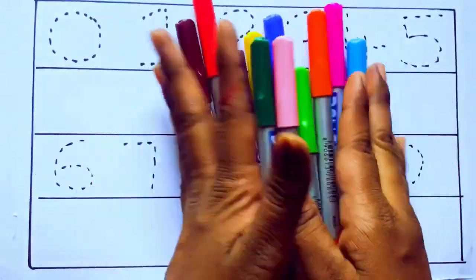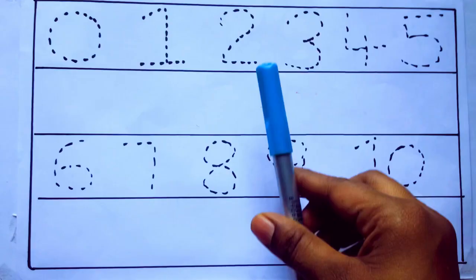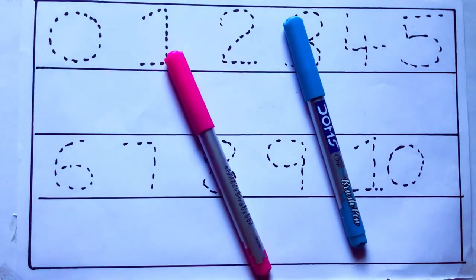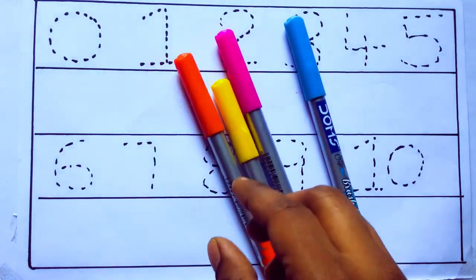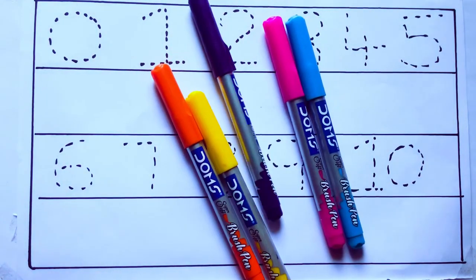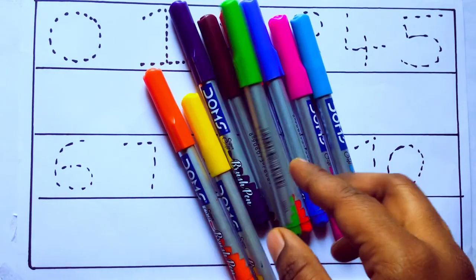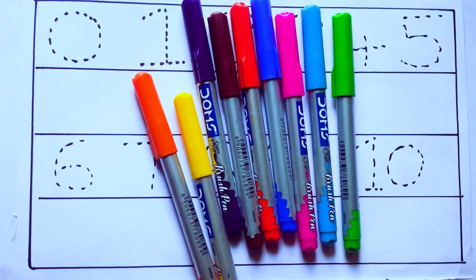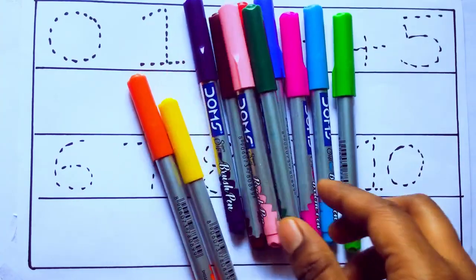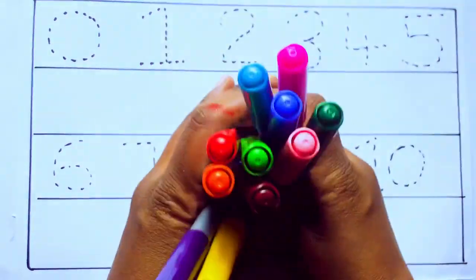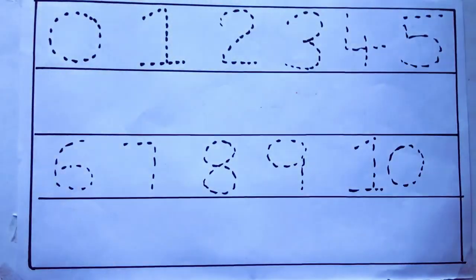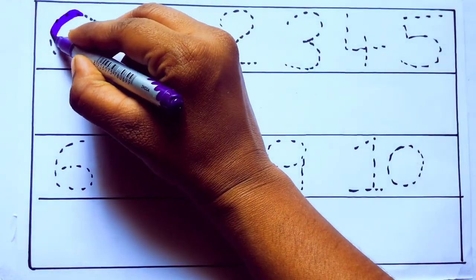Let's learn some colors. These are all the color pencils. Let's learn the names: sky blue color, pink color, yellow color, orange color, violet color, blue color, brown color, red color, green color, blue green color, and pink color. Let's draw numbers.